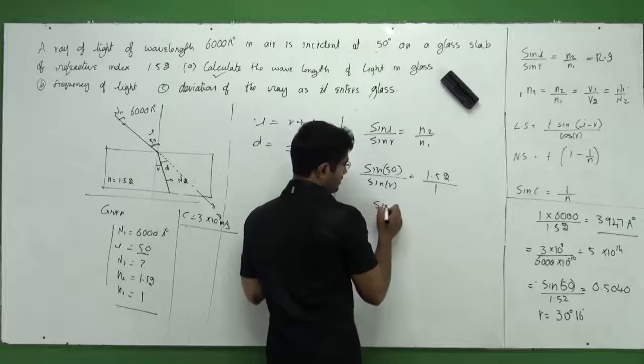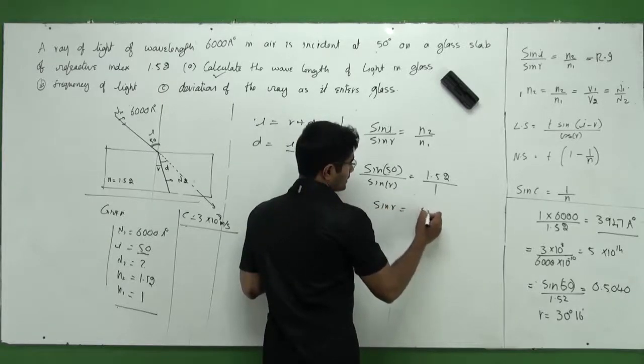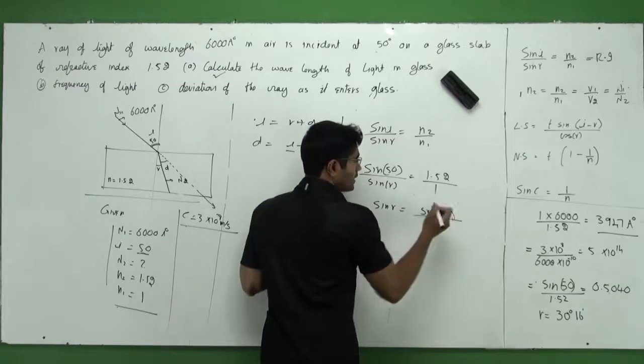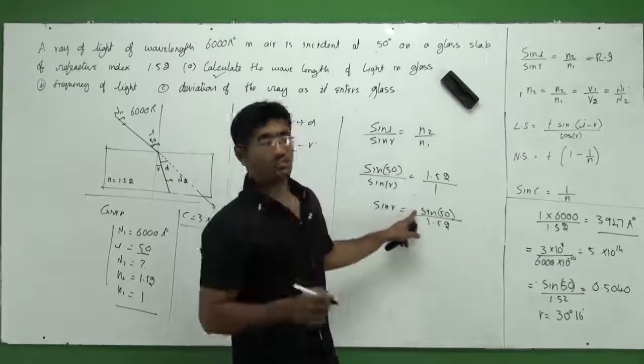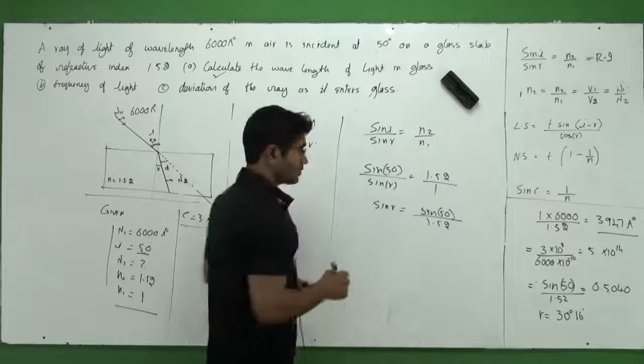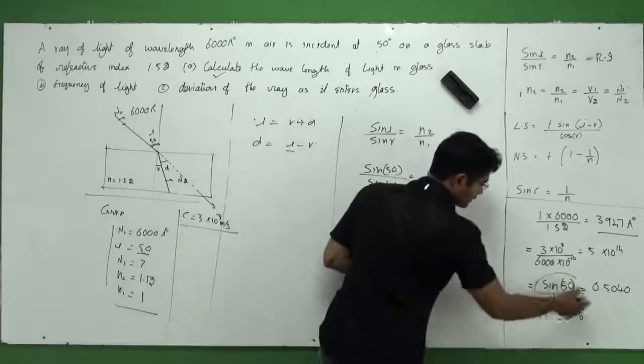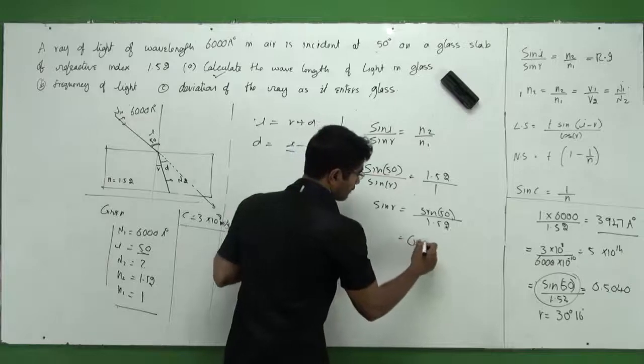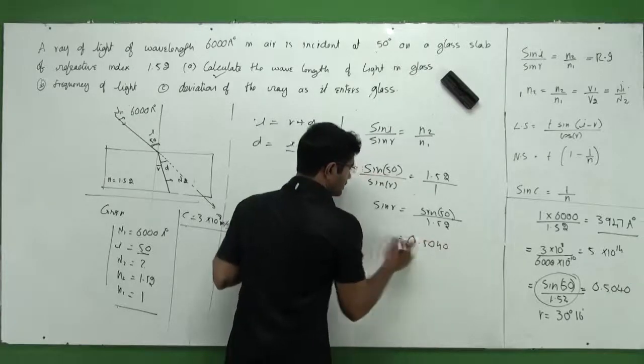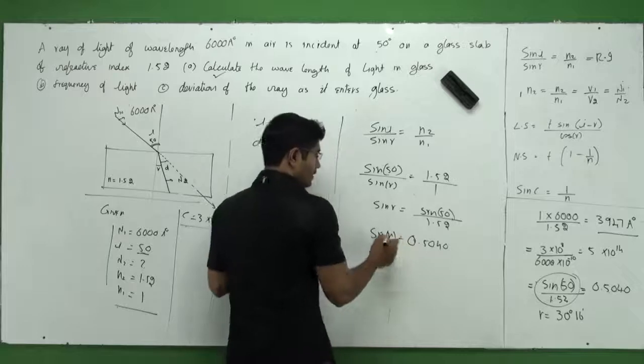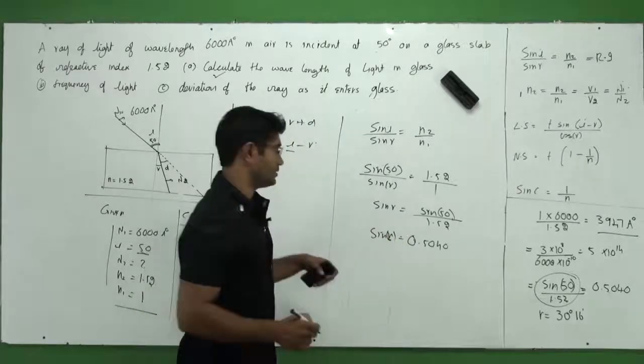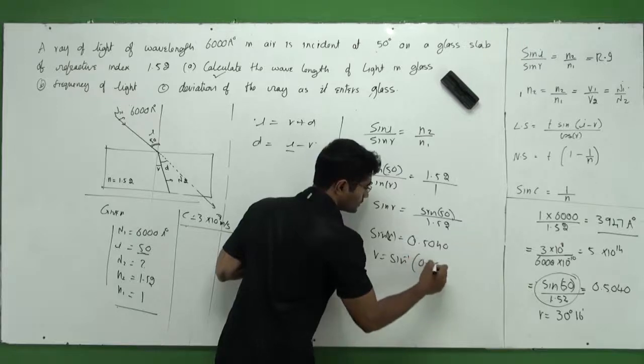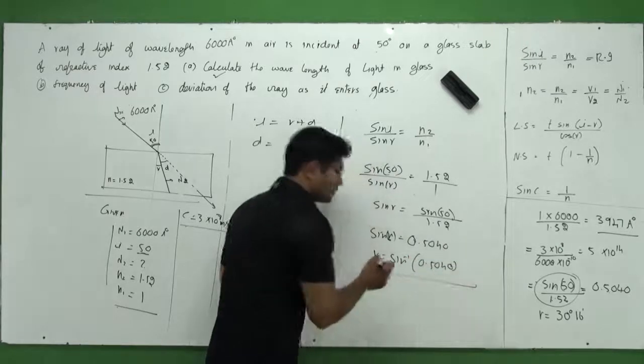Now, cross-multiply and sine r can be given as sine 50 divided by 1.52. That's what I have. Calculate the value of sine 50 from log tables. Have a log table with you. Okay, and I see that if at all I take sine 50 by 1.52, I get something like 0.5040. This you can do with your log book and calculator. Now, from here I can calculate r. r is nothing but sine inverse of 0.5040. Okay, this is the value I need.